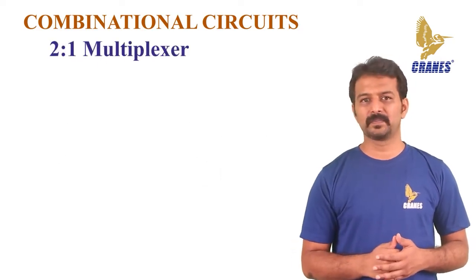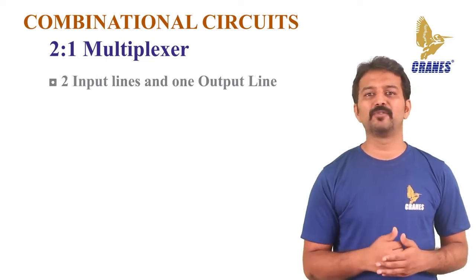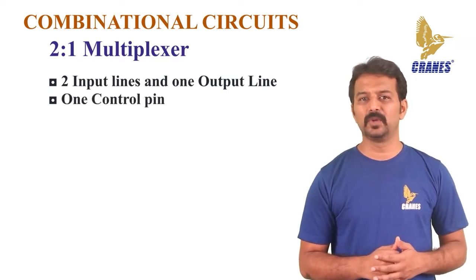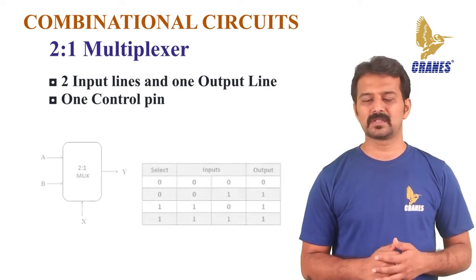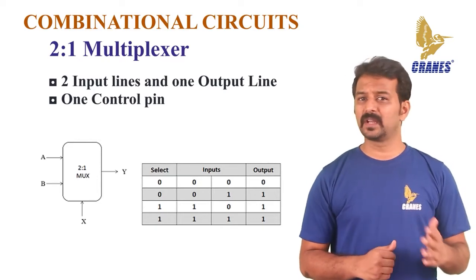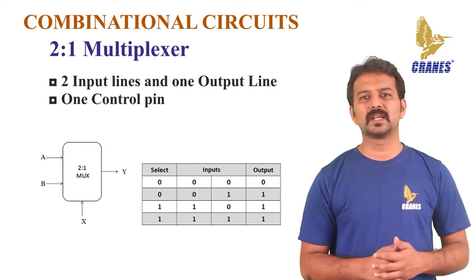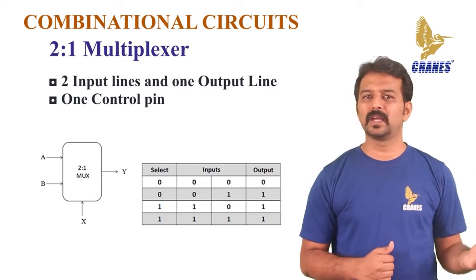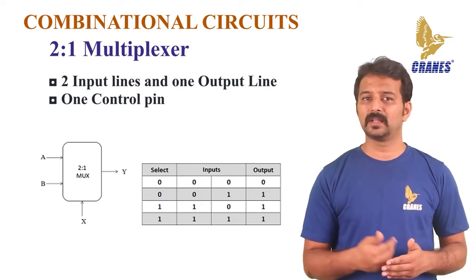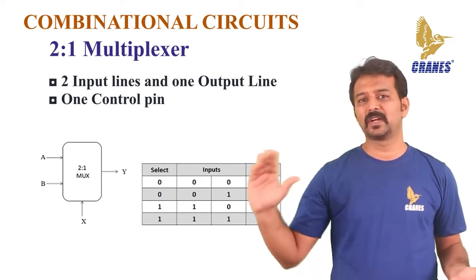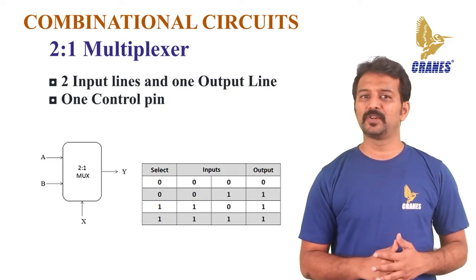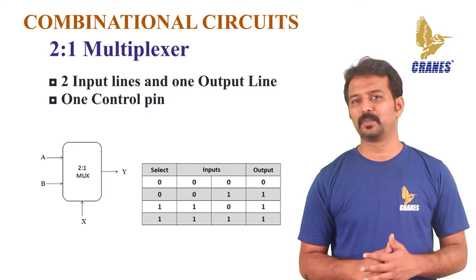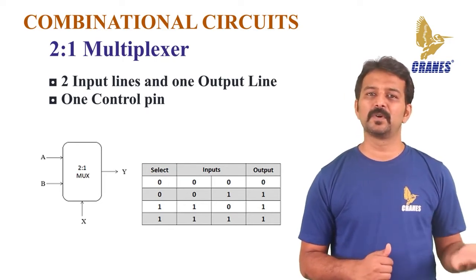Let's look at a 2-to-1 multiplexer. As the name suggests, a two-input multiplexer will have two input lines and one output line, and only one control pin to select between the two available input pins. The input pins are named A and B and the output is named Y. The user can select either A or B using the control pin X. If X is kept low, then input A will be reflected on the output pin. If X is kept high, i.e. logic 1, then input B will be reflected on the output pin. The truth table explains the functionality of a 2-to-1 mux: when select X equals 0, input A is reflected at the output; when select X equals 1, input B is reflected at the output.